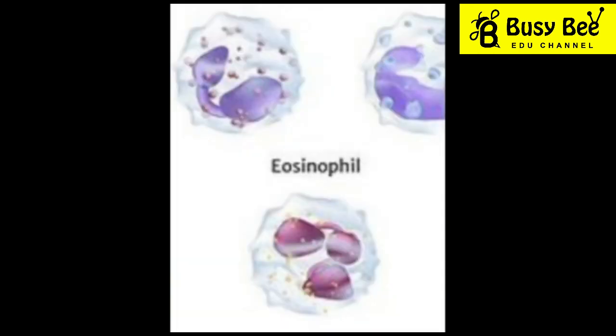Basophils have a lobed nucleus and constitute about 0.5-1% of the total WBC. Granules absent in the cytoplasm are called agranulocytes. There are two types of agranulocytes, namely lymphocytes and monocytes. Lymphocytes constitute about 20-25% of the total WBC. Monocytes constitute about 2-5% of the total WBC.